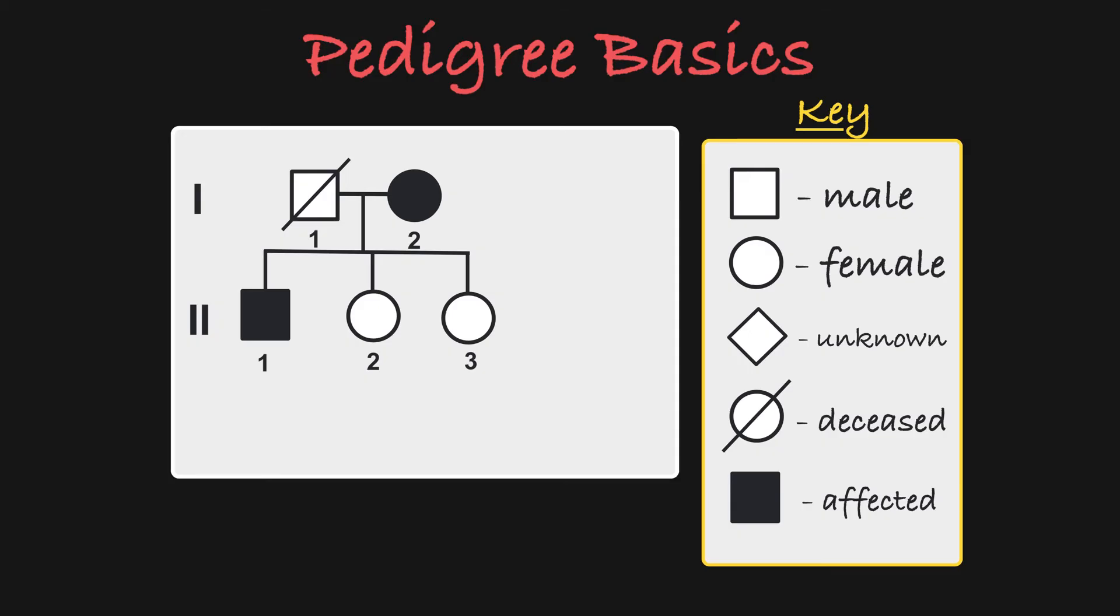Now when a person mates with someone outside the family, you connect the pair by a mating line like this. So this female mates with a male outside the family and has two sons. These sons are in generation 3.